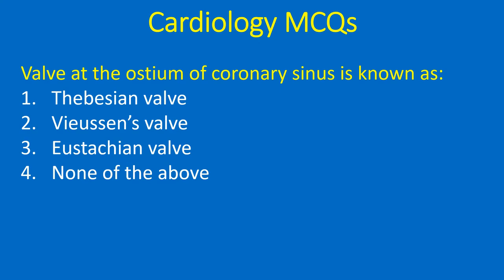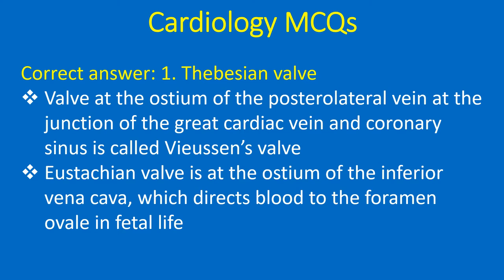Valve at the ostium of the coronary sinus is known as: 1. Thebesian valve, 2. Vucins valve, 3. Eustachian valve, 4. None of the above. Correct answer: 1. Thebesian valve. Valve at the ostium of the posterolateral vein at the junction of the great cardiac vein and coronary sinus is called Vucins valve. Eustachian valve is at the ostium of the inferior vena cava, which directs blood to the foramen ovale in fetal life.